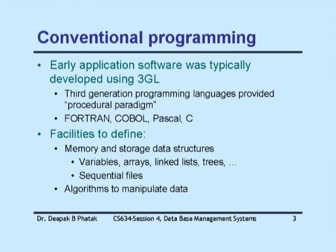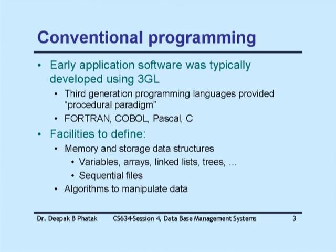Going back to conventional programming — I presume all of you are familiar with some programming language, whether Fortran, C, Basic, or whatever. The early application software, that is information system applications, were typically written using a third-generation language. 3GL stands for third-generation language. The first-generation language was machine language, with which you write programs for the actual CPU of a machine. Machine languages were different for every processor — Intel would have its own, Motorola would have its own.